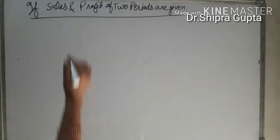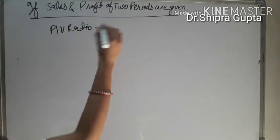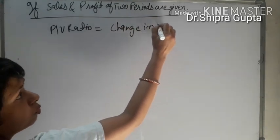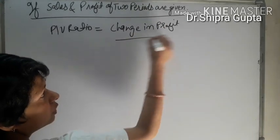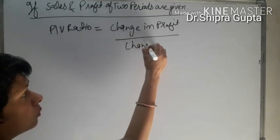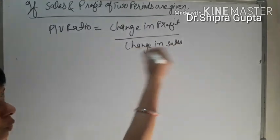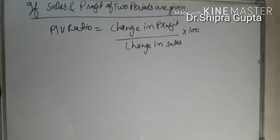In this situation, the PV ratio formula is: PV ratio equals change in profit (the difference between two years' profit) upon change in sales (difference between two sales) multiply by 100. Then we can calculate PV ratio.